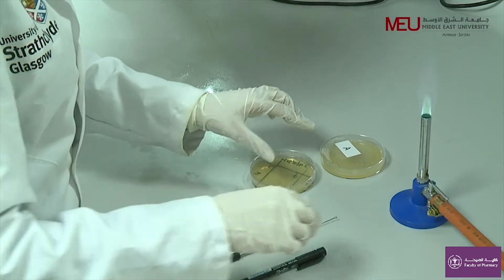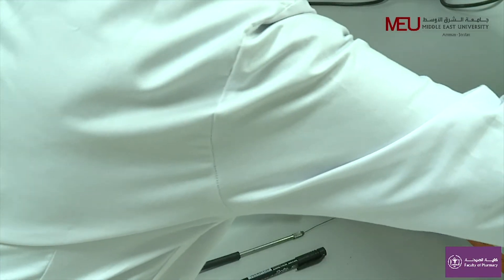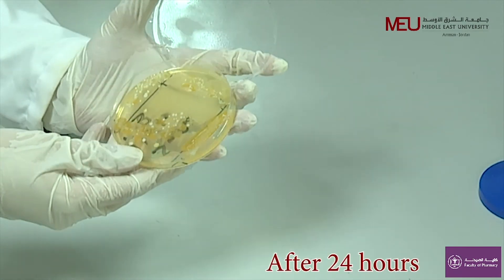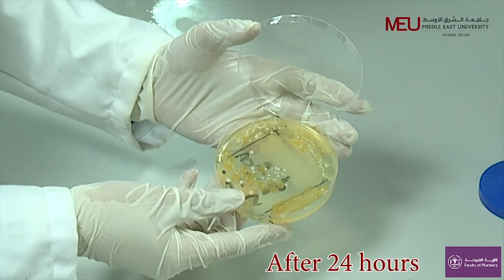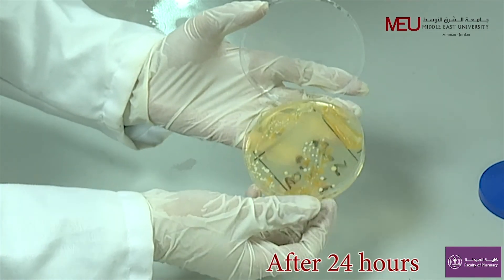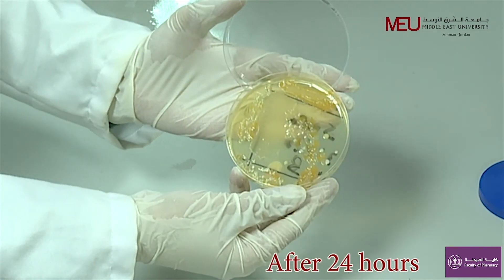When you finish, keep your working area clean and tidy and close the Bunsen burner. Observe your findings and record what you see. You are supposed to find pure colonies in quadrant 4. Thank you.